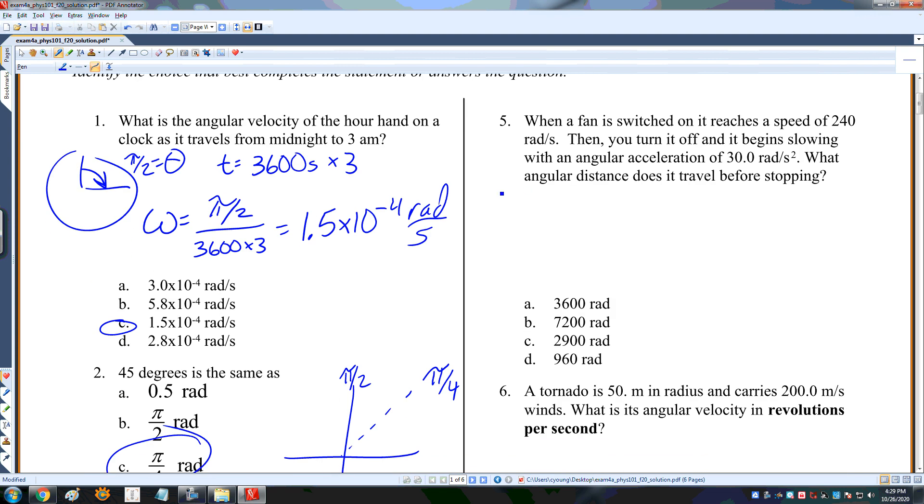When a fan is switched on, it reaches a speed of 240 radians per second. You turn it off and it begins slowing. What angular distance does it travel? I'm looking for theta equals omega nought t plus 1 half alpha t squared. My omega nought is 240, and it's going with an angular acceleration of 30 radians per second squared, but that's negative because it's slowing down. I need to figure out the time. I say omega equals omega nought plus alpha t. Omega is going to be 0, because it starts at 240 and slows down to 0. So 0 equals 240 minus 30 times t, and I get 8 seconds.